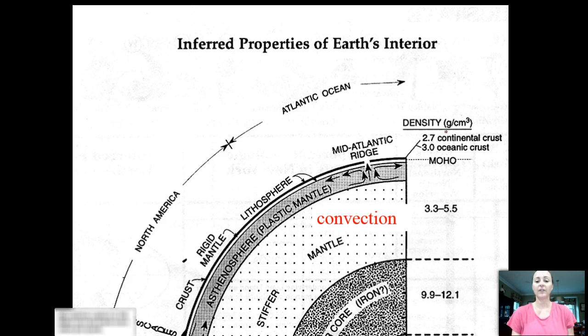Now if we look at our reference table and you see this page, Inferred Properties of the Earth's Interior, you will notice a convection current right underneath the earth's crust in what we call the asthenosphere.